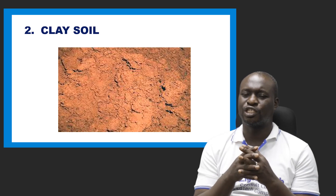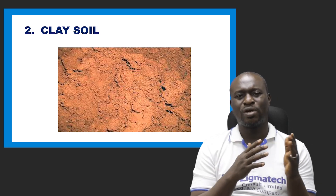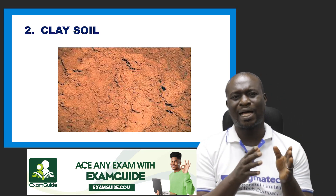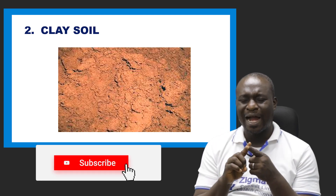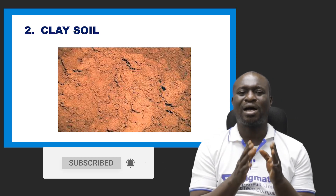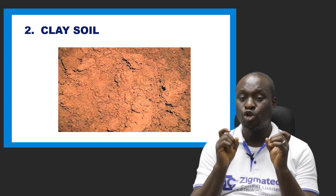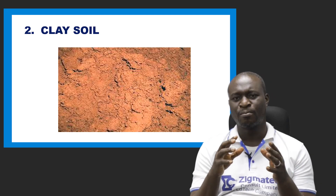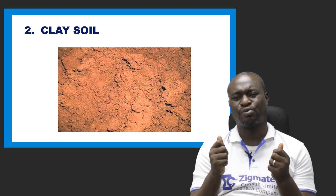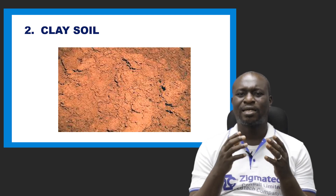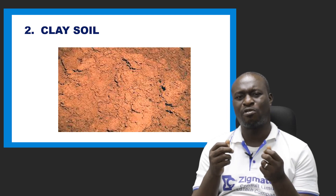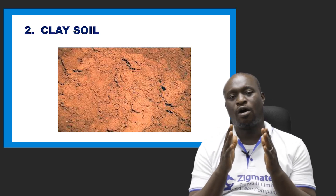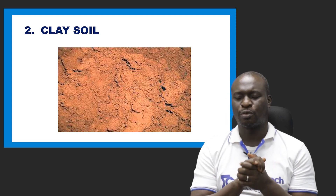The next type is clay soil, which is almost the opposite of sandy soil. Clay soil has the highest water retaining capacity and very low porosity. Clay soil is not well aerated, is brown or reddish-brown in color, and is sticky when wet. The particles of clay soil are fine and closely packed together, and clay soil also supports scanty vegetation.